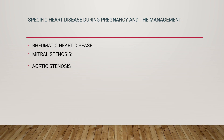Mitral stenosis is the commonest heart lesion met during pregnancy. Normal mitral valve area ranges between 4 and 6 centimeters. Main symptoms usually appear when stenosis narrows this to less than 2.5 centimeters. Women with a mitral valve area less than or equal to 1 centimeter have a high rate of pulmonary edema — 55% — and arrhythmia rate of 33%.